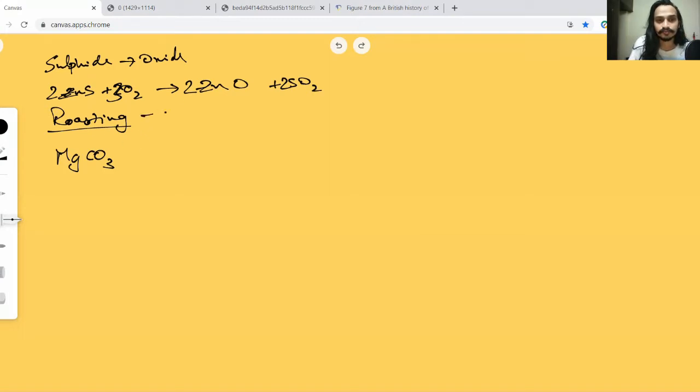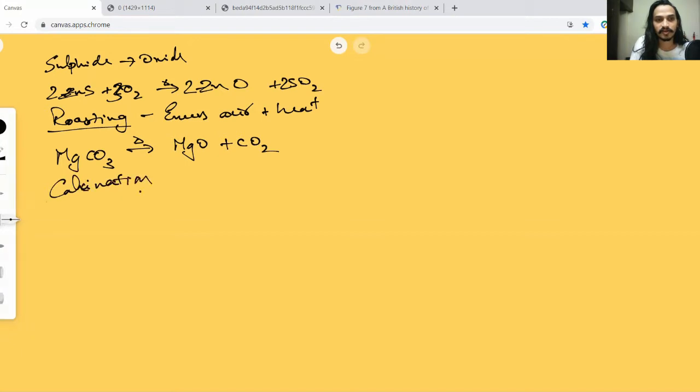If I have to do that, I'm going to heat this but in a lack of air. When you roast you say excess air and heat, but sometimes you might need to heat it with a lack of air. In that sense, I'll get magnesium oxide and carbon dioxide gas.